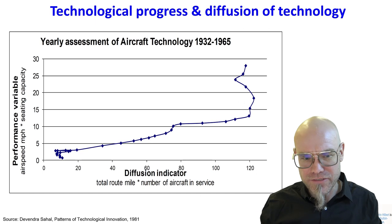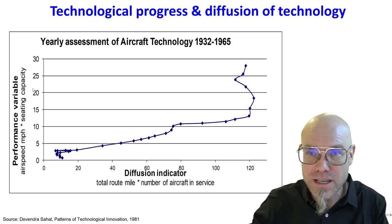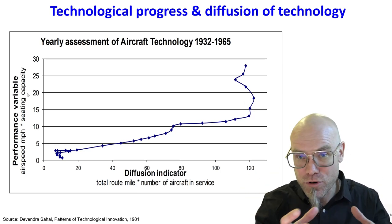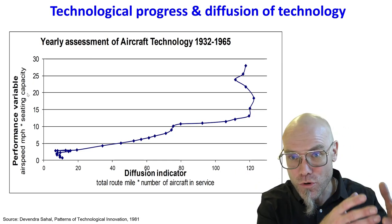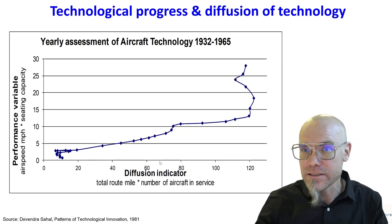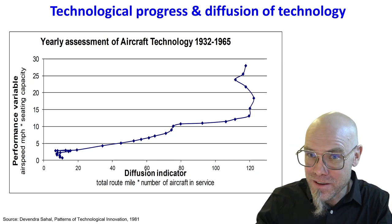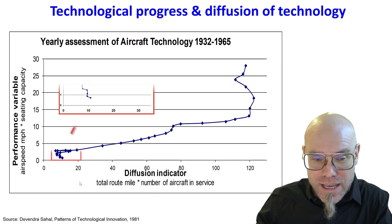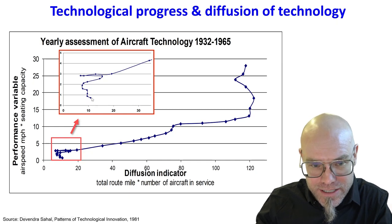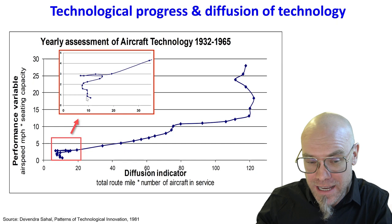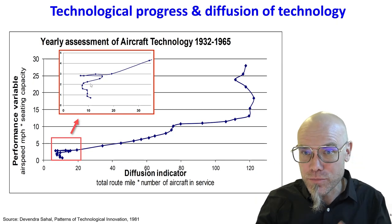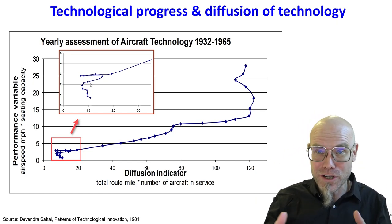Here I take aircraft technology as an example. On the y-axis I use a performance indicator — how much can the airplane transport, how fast — so it can transport more faster as we go up. The diffusion indicator is how many aircrafts there are and how many miles they travel. You can see that during times when performance increased a lot, there wasn't a lot of diffusion going on, because there was no stable technology — the propeller technology just came in and we didn't even know what a propeller airplane was.